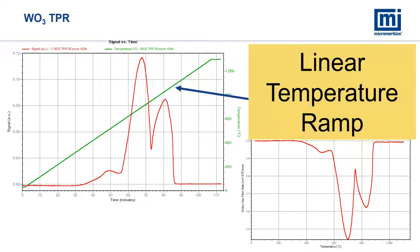Here is another example with tungsten oxide. The reduction fingerprint of this material shows multiple oxidation states and reduction requiring higher temperatures. This TPR was performed to 1200 degrees Celsius and the temperature ramp rates are well maintained and completely linear throughout this range.